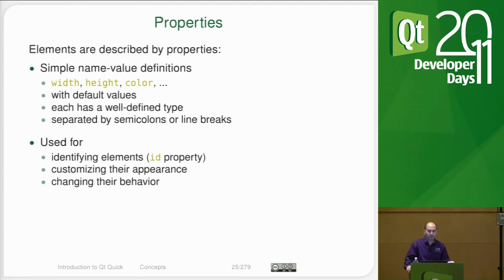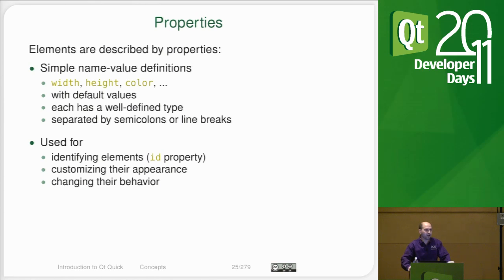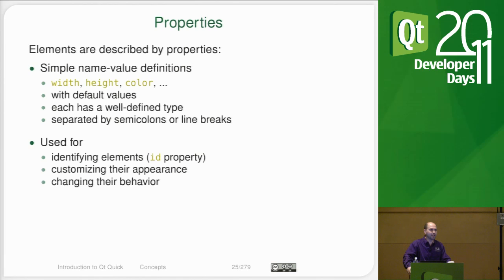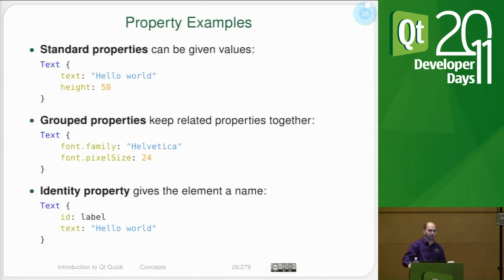Most properties are very simple — you're going to have a type and a name. Things like width, height, X, Y, and color. Generally these are going to have default values, and they're all documented inside the documentation, whether it's on the web, in Qt Assistant, or directly inside Qt Creator. There is a special property called the ID property, and if you use the ID property, that is how you can reference that item elsewhere in the QML file and basically use that item as a variable. You can use this to change the behavior or look of the item as the user interacts with the user interface.